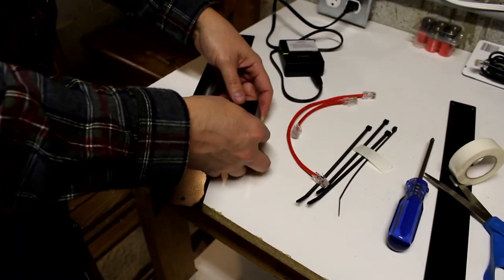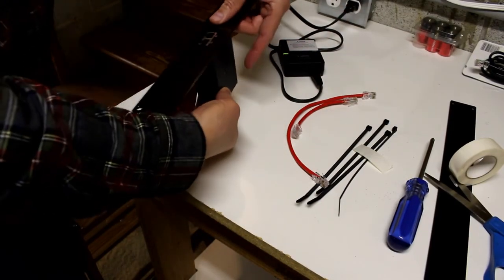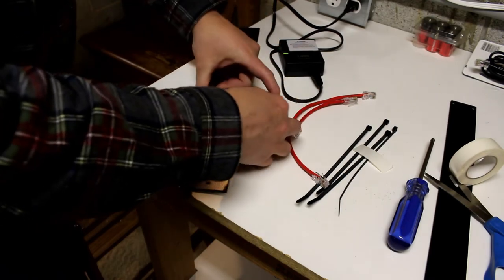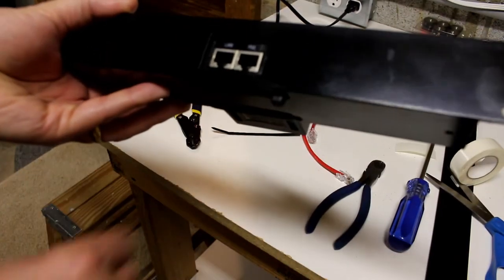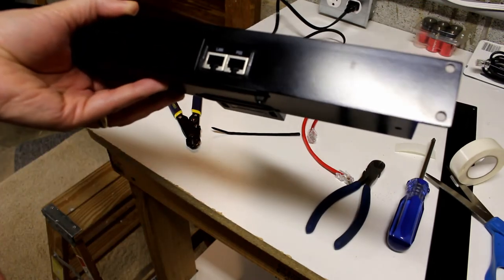take the tape off and put it in, the zip ties hold it together. So there it is nice and seamless and that is for the Ubiquiti PoE injector.